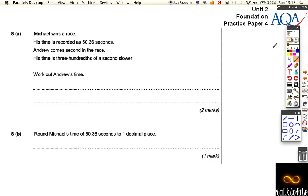Question number eight on this practice paper, the fourth practice paper, getting ready for a unit two exam. Michael won a race. His time is recorded as 50.36 seconds. Andrew comes second and his time is three hundredths